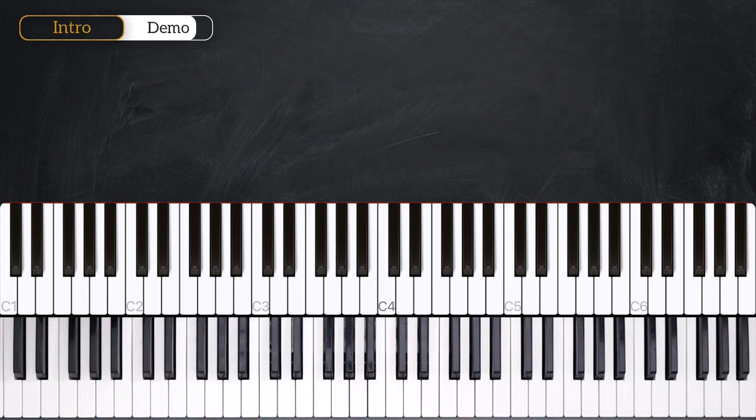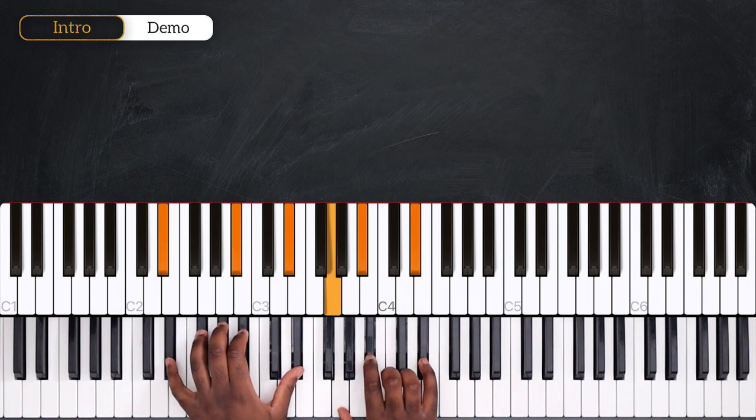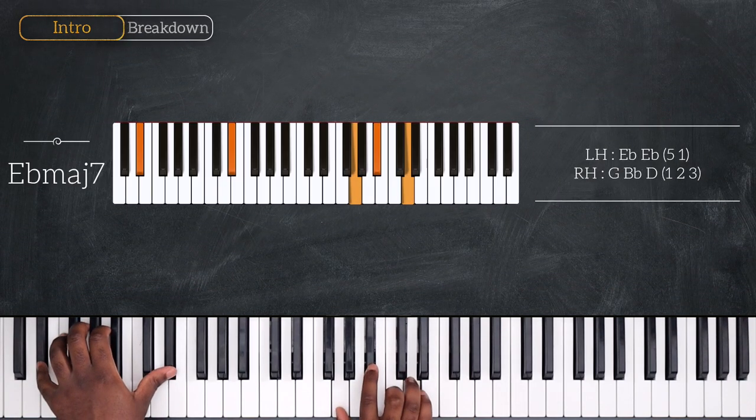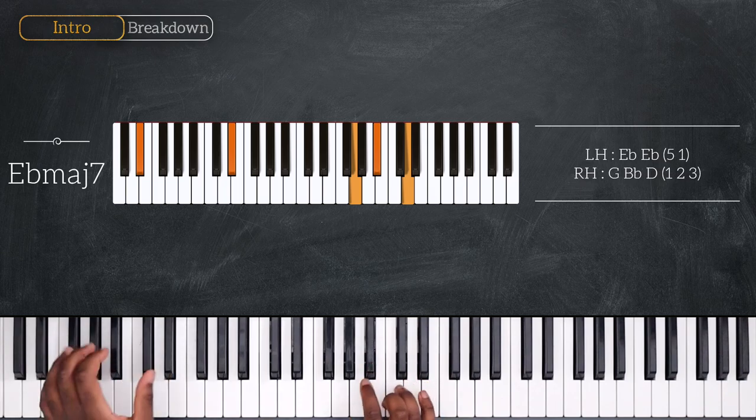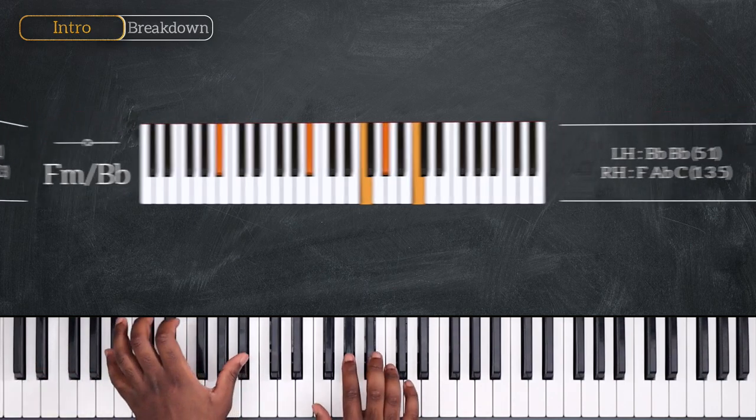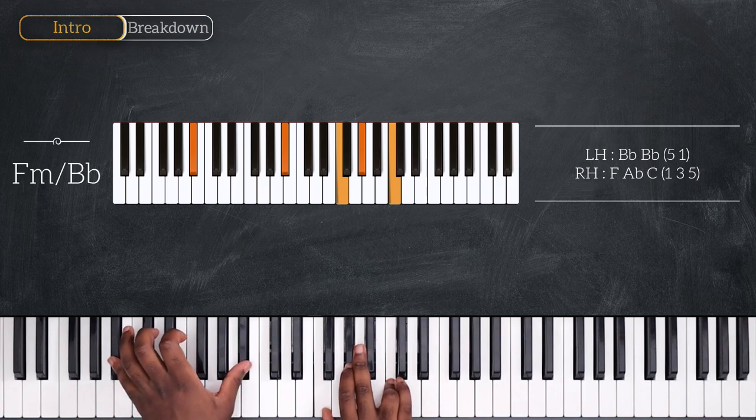For this first part, I'm going to teach you how to play the intro, the intro of the song. We're playing in Eb, and we're going to start with Eb major 7. Playing octave Eb on the left, down here on the keyboard, with G, Bb and D. Then I'm going to move up a perfect fifth, playing this F minor over Bb. So octave Bb, with F, Ab and C.